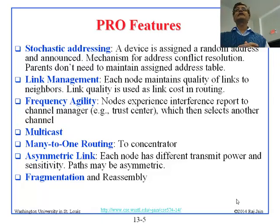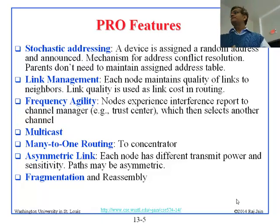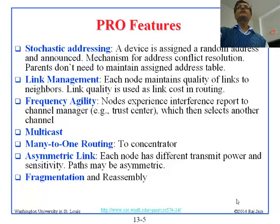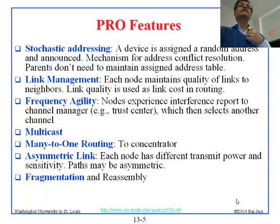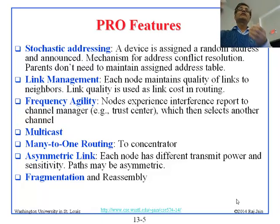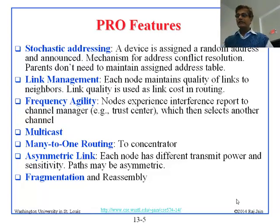Many-to-one is very common in sensor networks because there are many sensors and only one reader — many to one concentrator. Asymmetric link: it is quite possible that the signal going from me to node X has a certain error rate, while coming from X to me has a different error rate, because each node's sensitivity and power are different. So the costs are not symmetrical, and in the latest version they fixed that.